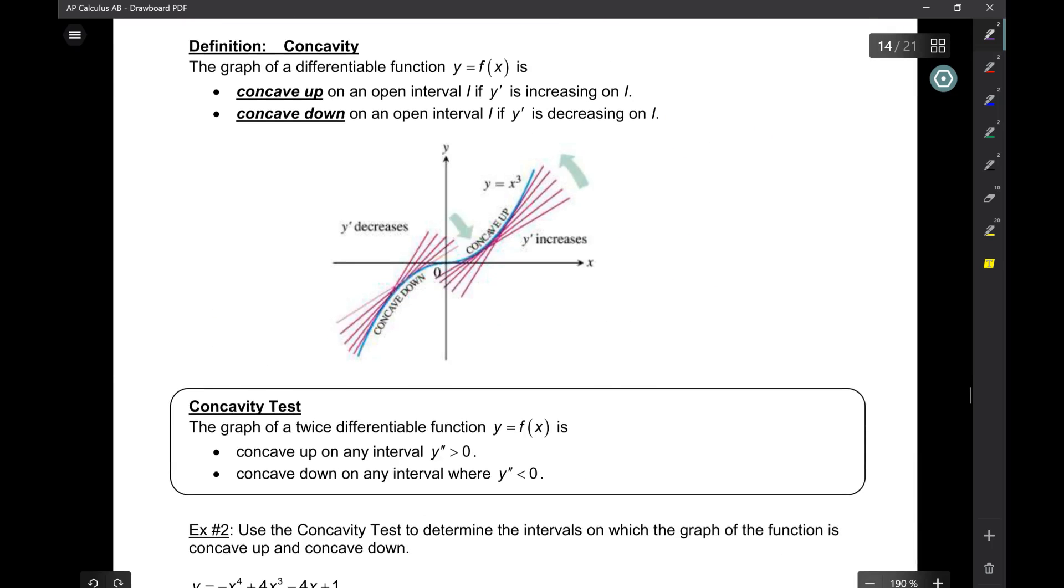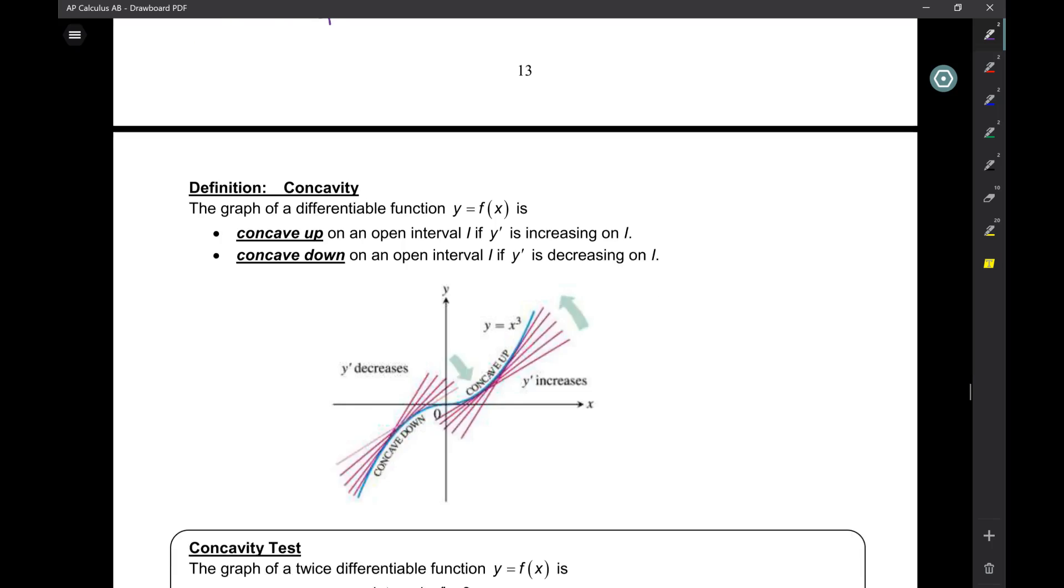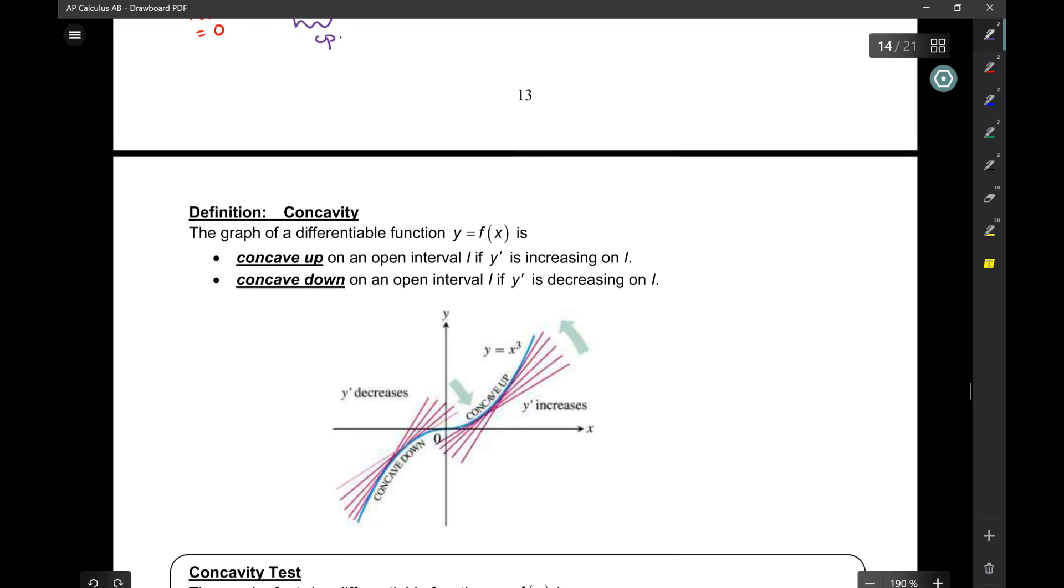Okay. Now for a new concept. Concavity. So, concavity is how the graph is curved, basically. All right? So, if you have something that looks like this, this is concave up. And then if you have something that looks like this, we say it's concave down. So, basically, like if it's a container opening upwards, it's concave up, sort of.